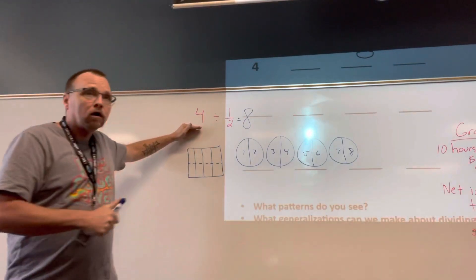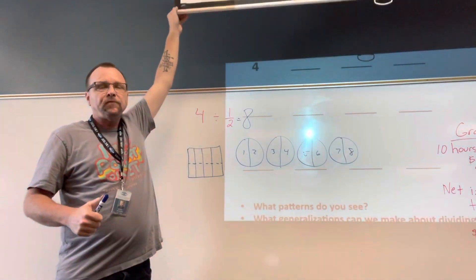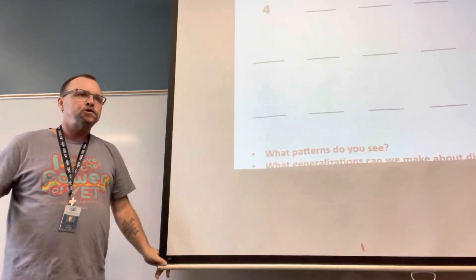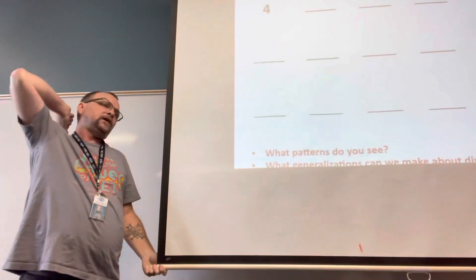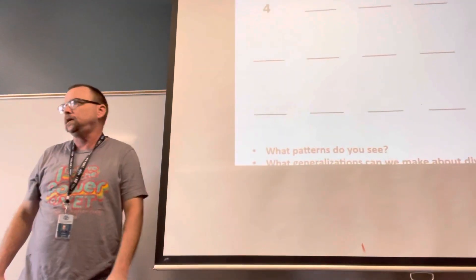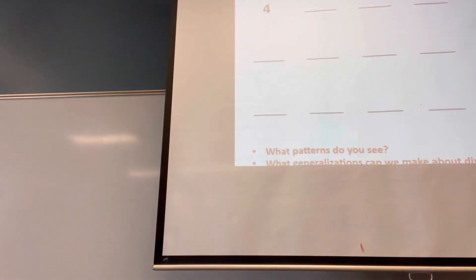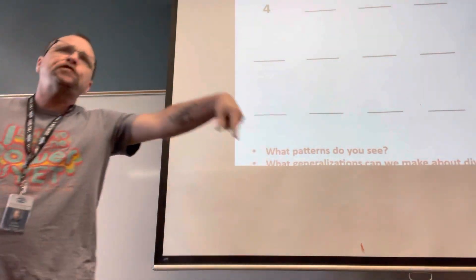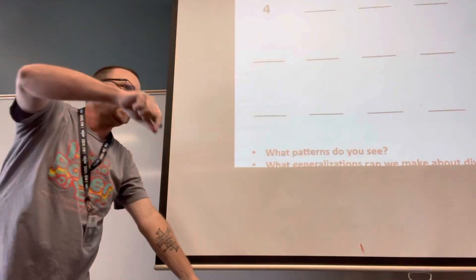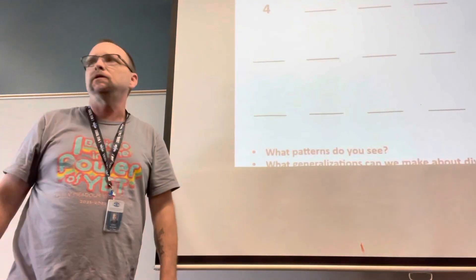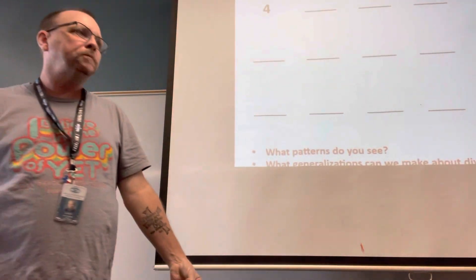So, four divided by one-half equals eight. Jonah, eight divided by one-half equals sixteen. Layla, sixteen divided by one-half equals thirty-two. Abby, thirty-two divided by one-half equals sixty-four. So what is my pattern when I'm dividing by one-half?